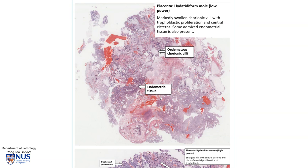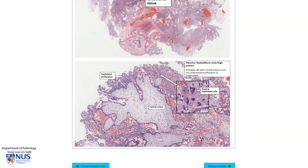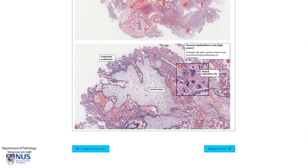There's also some endometrial tissue here, so this is taken from a curettage. Looking at high magnification, we can see a swollen villus. There are what we call central cisterns, which are empty spaces within the swollen chorionic villi. If we look at the periphery of the chorionic villus, we can see accompanying trophoblastic proliferation. When these villi become extremely swollen, they can be seen grossly as those grape-like vesicles.